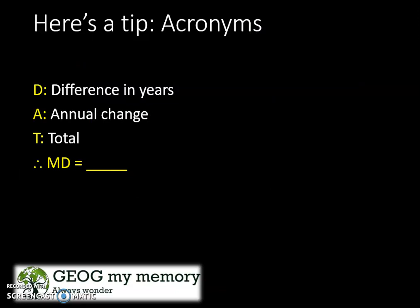Here's a tip for your exam: use the acronym DAT. D is where you calculate the difference in years. A is when you state your annual change. T is to calculate your total change. And therefore, this gives you your total magnetic declination.